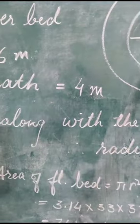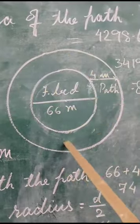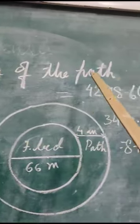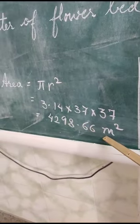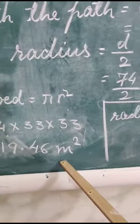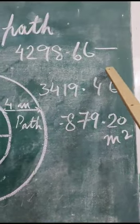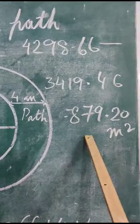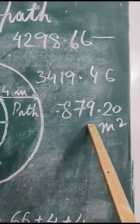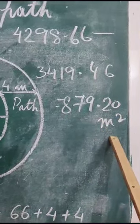Now finally, what is asked in the question? To find out the area of the path. Area of the path will be equal to the area of the bigger circle minus area of the flower bed. This is what I have done. Then finally, you get the area of the path—that is 879.20 meter square.